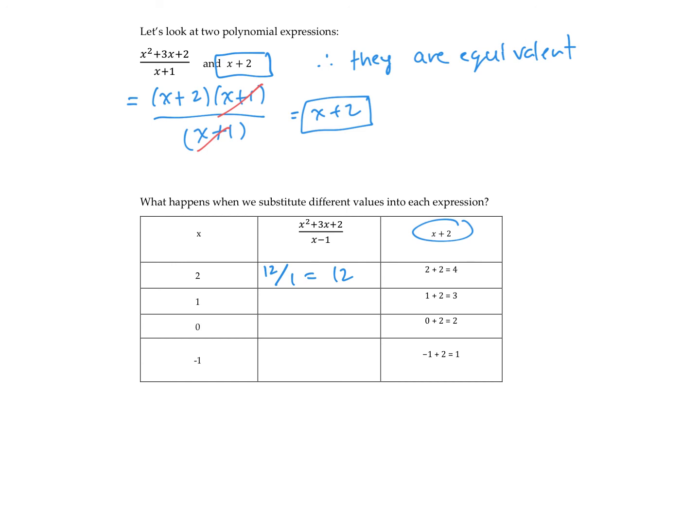So we can see that these are not equivalent for that value. Let's sub in 1, so 1 would be 1 plus 3 plus 2 is 6 over 0. Well, that's undefined, so that's not the same.